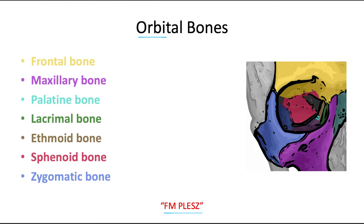The frontal is pictured in yellow, the maxillary in purple, that little piece of the palatine bone in teal, the lacrimal bone in green, the ethmoid bone in brown — that's the lateral plate of the ethmoid — then the sphenoid, and finally the zygomatic in blue. The nasal bone in dark green is not part of the orbit and is usually a distractor answer choice when they ask what bones are included in the orbit.